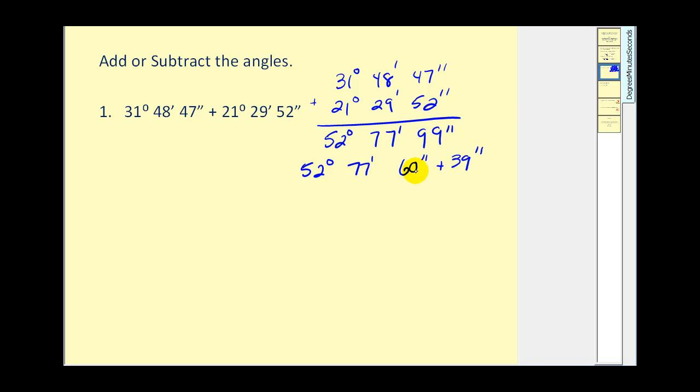But we know that 60 seconds equals 1 minute. So we can convert this to 1 minute. And the result would be 52 degrees, 78 minutes, 39 seconds. And now we can address the minutes.